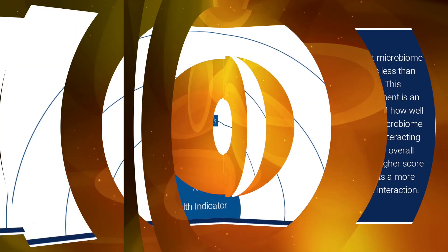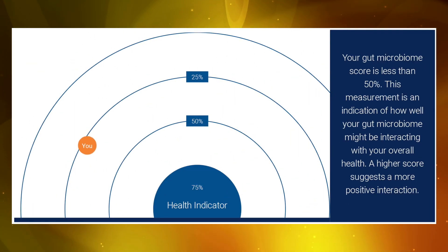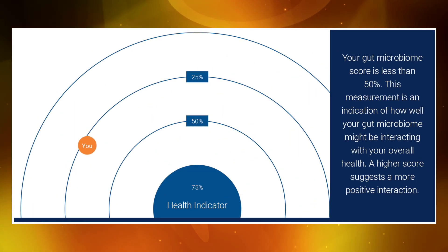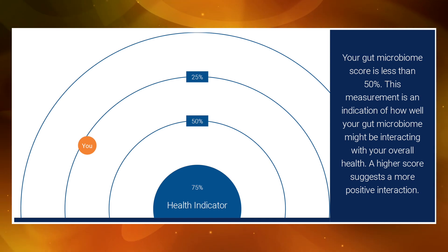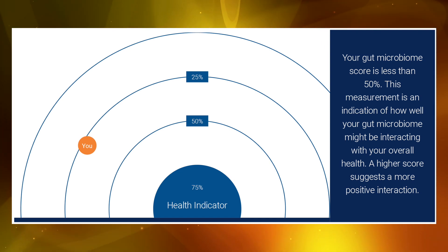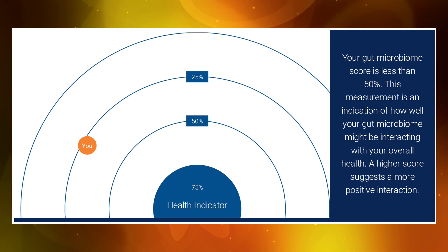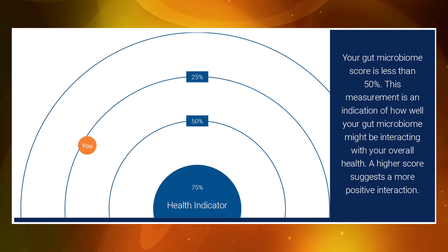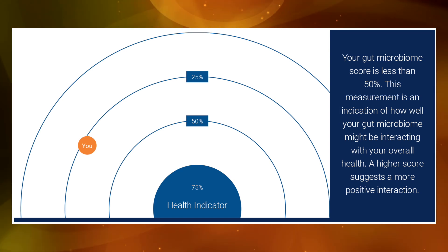Your analyzed sample is compared to a healthy comparison group. This group is a collection of gut microbiome samples from everyday healthy people who have not reported any significant health issues or symptoms. It represents a range of age groups, genders, and diets.